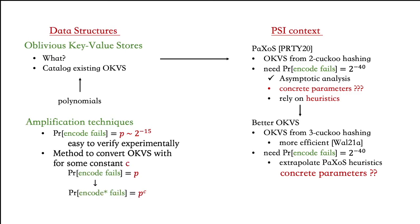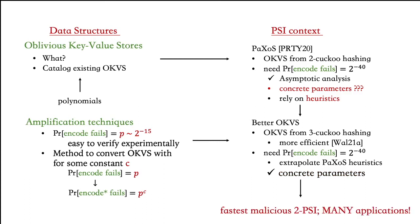Our next contribution is to show some amplification techniques. For some constant c, we show how to compose an OKVS with error p into an OKVS with error p^c with minimal overhead. Thus, we are provably amplifying the failure probability of an empirically verified OKVS. This allows us to choose our concrete parameters for our OKVS with cuckoo hashing with three hash functions.